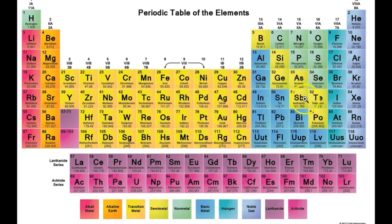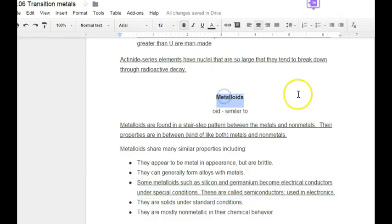There's also a small section listed as a semi-metal. Semi means half, so this is a half metal — kind of a metal. The more common term is metalloid, because 'oid' means similar to. Metalloids are found in a stair-step pattern between the metals and non-metals on the periodic table. Their properties are in between, kind of like both metals and non-metals.